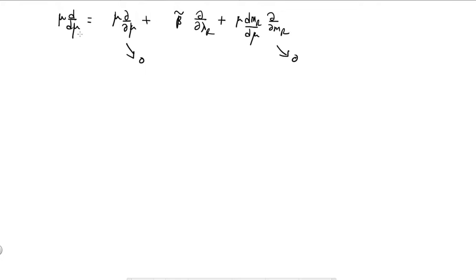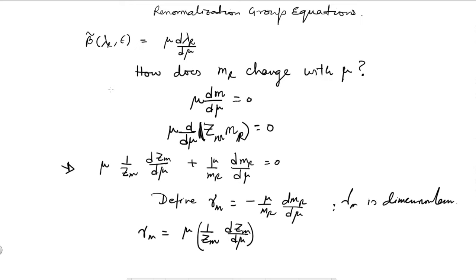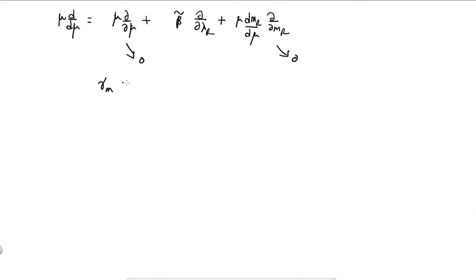These terms will give you 0 when you act on zm, because for the same reason there is no explicit dependence on mu and no explicit dependence on mr when working in the MS-bar or MS scheme. So we get gamma_m. Substituting that in, mu d over d_mu acting on zm is replaced by beta tilde times del over del_lambda_r, and then gamma_m equals beta tilde over zm times del_zm over del_lambda_r.